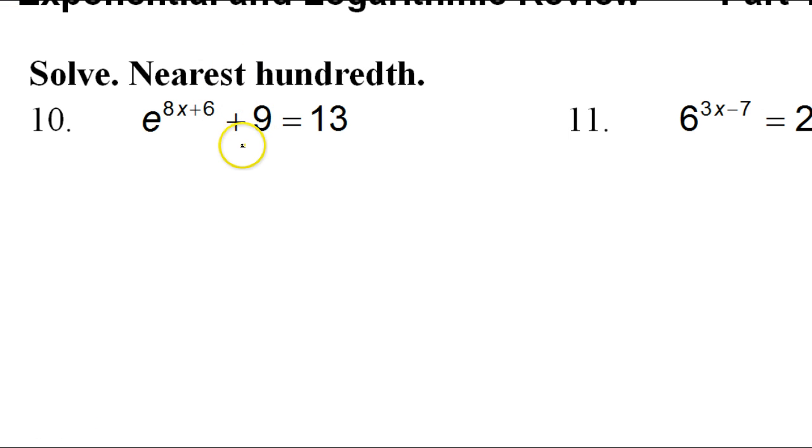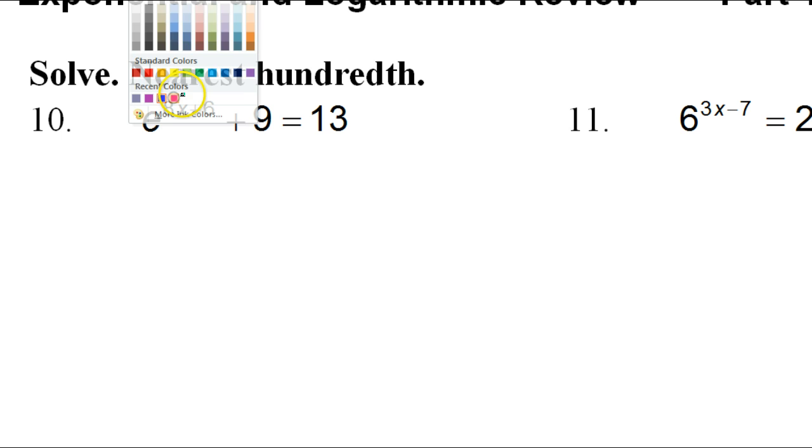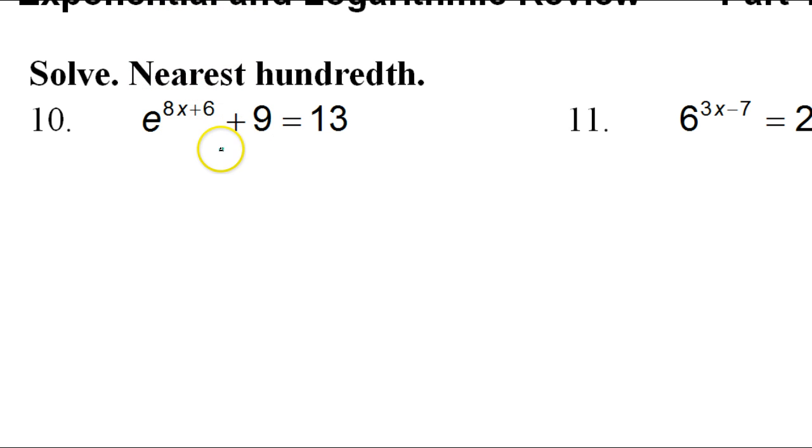For number 10, we're trying to get x by itself here. So the first thing we need to do is subtract 9 from both sides. So that's going to give us e to the 8x plus 6 power is equal to 4.